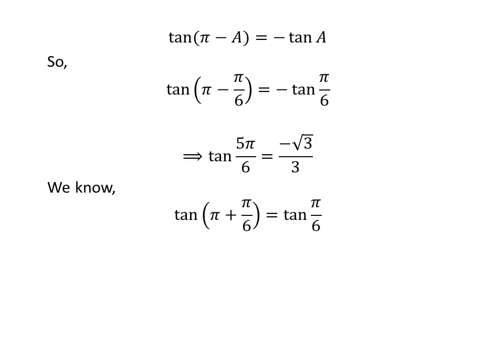As we know, the tangent function is a periodic function with period pi. Thus, tangent of pi plus pi upon 6 is equal to tangent of pi upon 6. As pi plus pi upon 6 is equal to 7 times pi upon 6, and plugging the value of tangent of pi upon 6 gives us tangent of 7 times pi upon 6 is equal to square root of 3 upon 3.